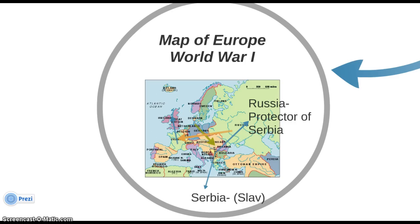Germany was trying to stake out and carve out a position of dominance within Europe at the expense of Russia and its vast territories. You can see on the map just how large Russia was, along with Russia's friends and allies. On the map there are a bunch of arrows, crudely drawn in different colors. Let's start with Russia on the right-hand side — that is, in the east.